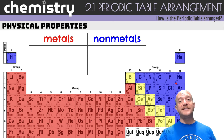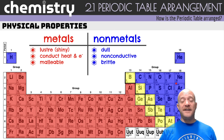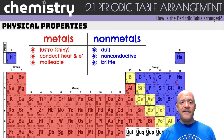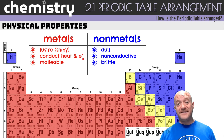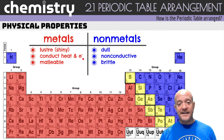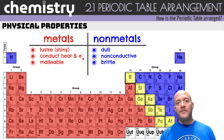For physical properties, I'd like you to set up a T-chart. Metals have luster — they are shiny. Metals conduct heat and electricity; the flow of electrons is technically what electricity is, represented by a lowercase 'e' with a dash. Metals are also malleable, which means they can be bent into particular shapes without breaking.